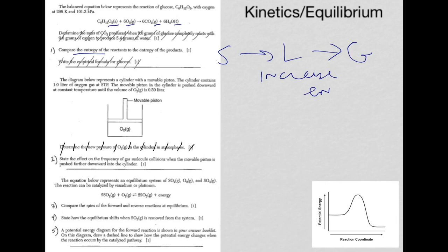That's the amount of disorder in a system, or in this case, in a reaction. So the entropy of the reactants, it's asking you to compare it, is less than the entropy of the products.